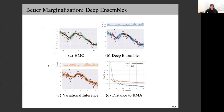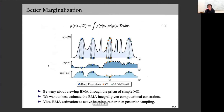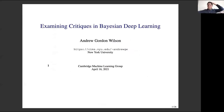A question from the audience: this notion that we're not really interested in the posterior for its own sake, but ultimately want to compute the predictive integral — that reminds me of work done around the same time on loss-calibrated inference. There might be a way to see the samples produced by deep ensembles as samples provided by a loss-calibrated inference method.